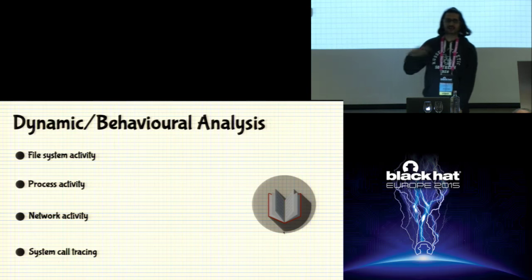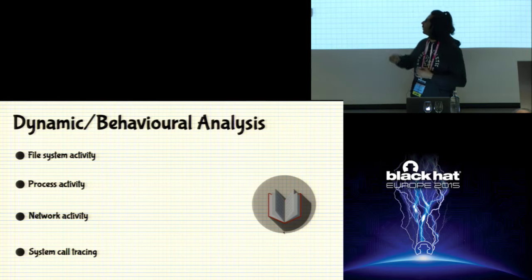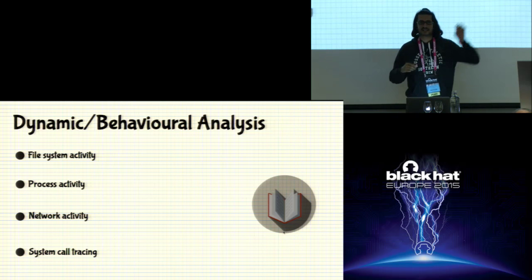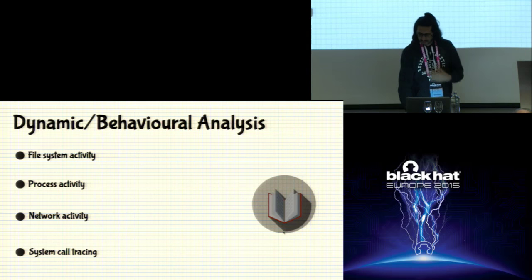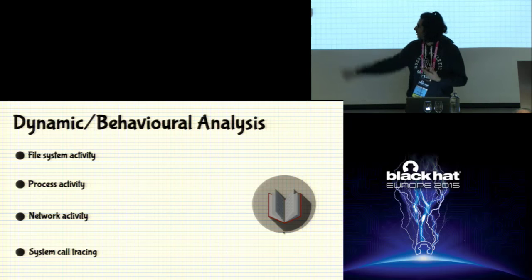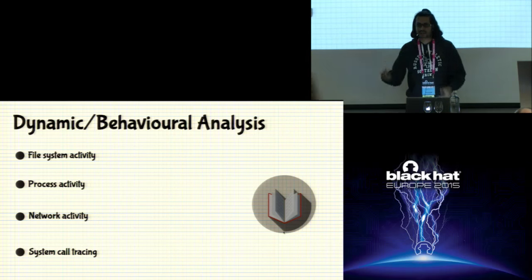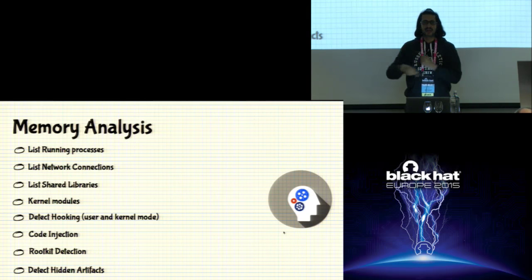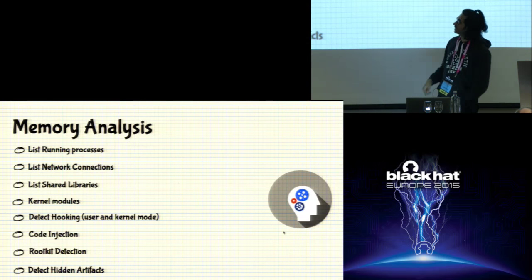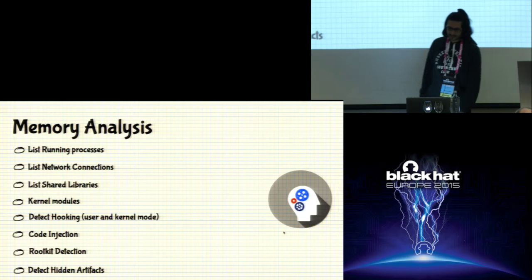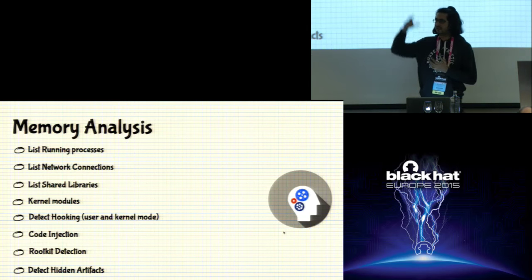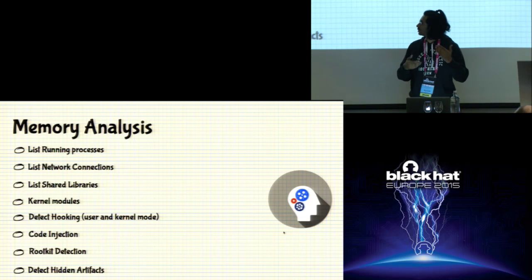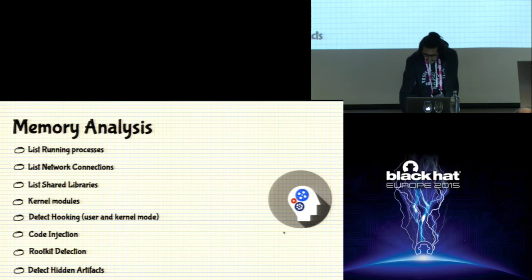In dynamic analysis, you execute the malware and monitor its activity — monitoring file system activity, whether it creates additional processes, and whether it connects to the network. You might also want to do system call tracing to see everything the malware is doing. In memory analysis, once you execute the sample, you take a memory image and analyze it for forensic artifacts, such as the list of running processes, network connections, shared objects loaded, kernel modules, code injection, and hooking.